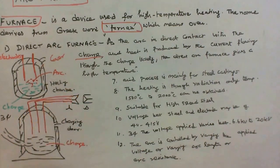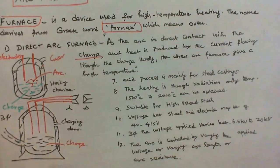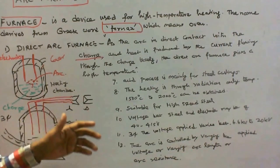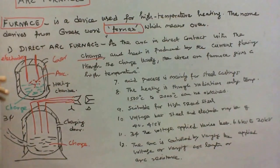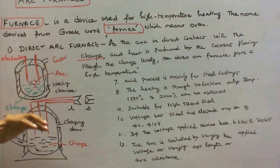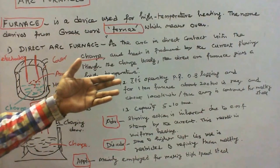Voltage between steel and electrode may be of 40 to 450 volts. In three phase, the voltage applied varies between 6.6 kV to 20 kV. The arc is controlled by varying the applied voltage, or by varying the arc length, or by varying the arc resistance. Its operating power factor is 0.8 lagging.